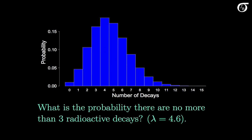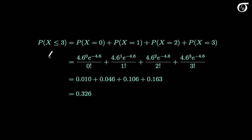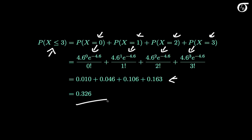Suppose we wanted a different probability — the probability there are no more than 3 radioactive decays. That's the highlighted portion on the plot. We need to work out the probability of 0, 1, 2, and 3 using the Poisson probability mass function and add them together. We need P(x ≤ 3), which is the sum of the probabilities of 0, 1, 2, and 3. Plugging these into the Poisson PMF with lambda equal to 4.6, and rounding to three decimal places, these four probabilities sum to 0.326. Working out probabilities like this can be tedious for many values, so we often rely on software to carry out the calculations.